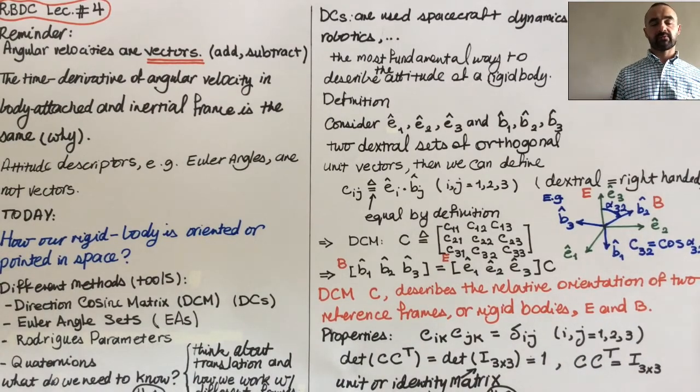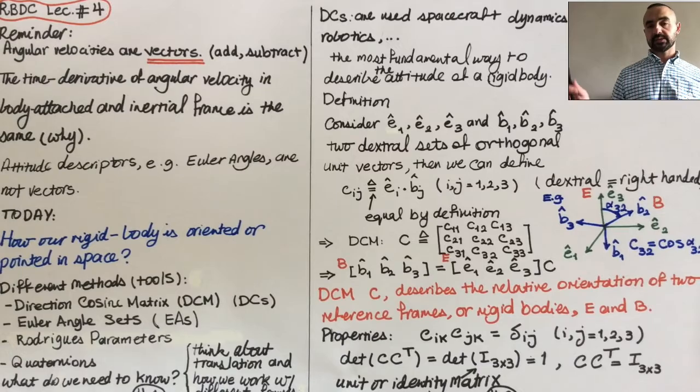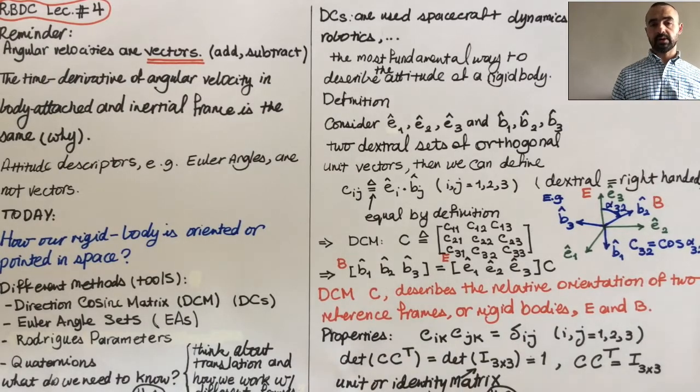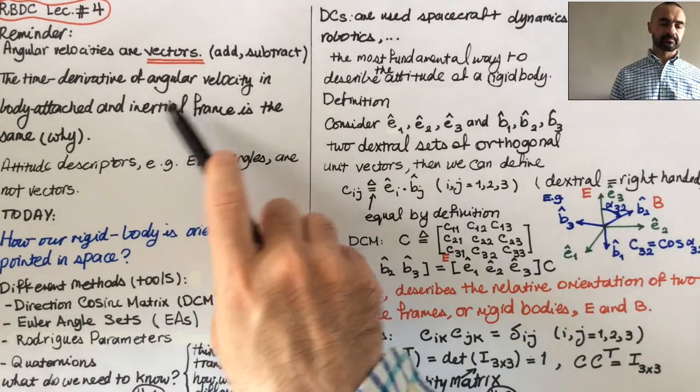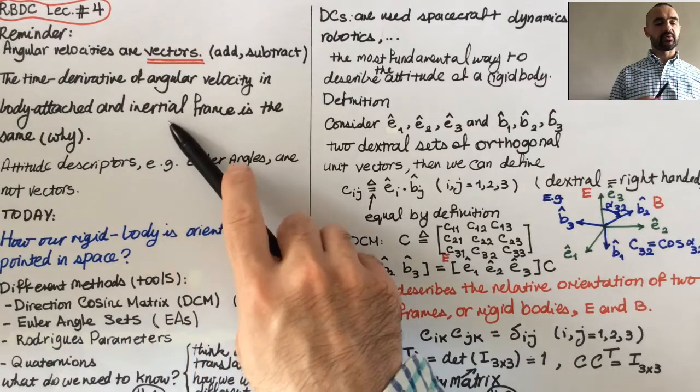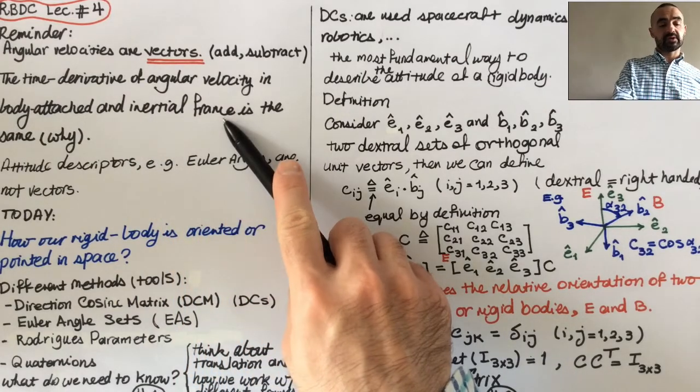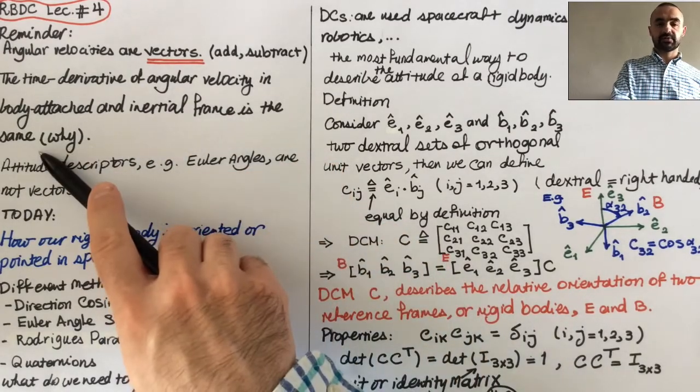Now if you think about it, if I differentiate Omega, the second term Omega cross Omega goes to zero. Therefore, the time derivative of angular velocity in body attached frame and initial frame is the same.